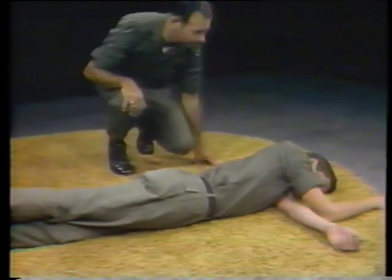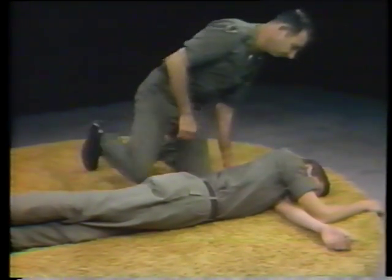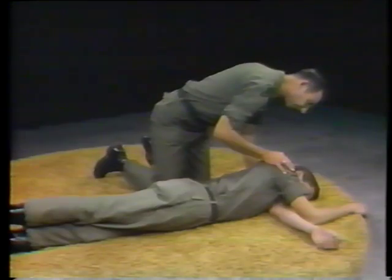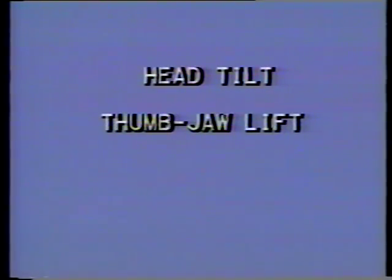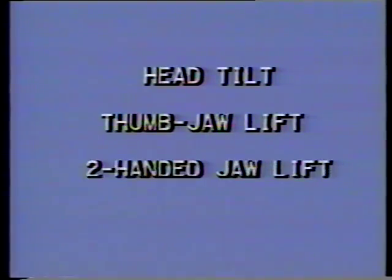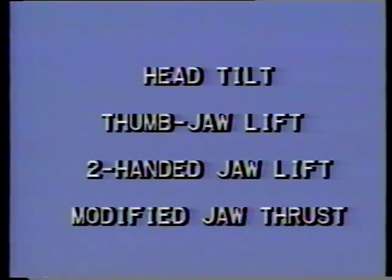You, the medical aid man, will want to take immediate action to solve this breathing problem before you tend to any other injuries. In such cases, you will want to open the airway. You can open the patient's airway by any one of four methods: the head tilt, the thumb jaw lift — also called the chin lift — the two-handed jaw lift, and the modified jaw thrust.